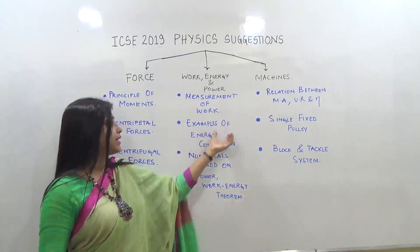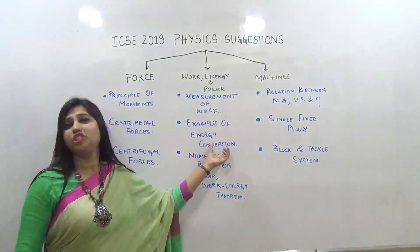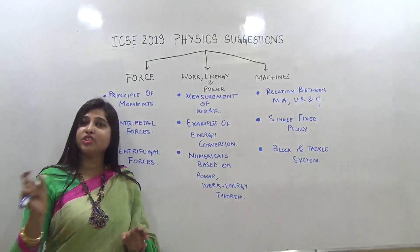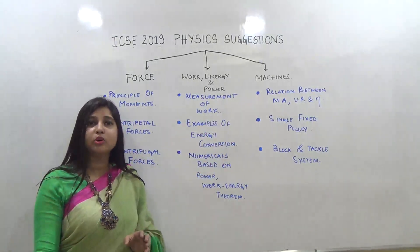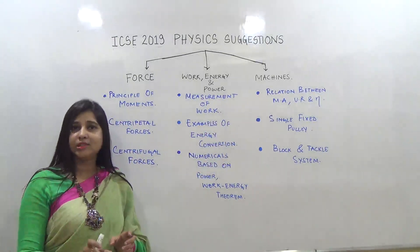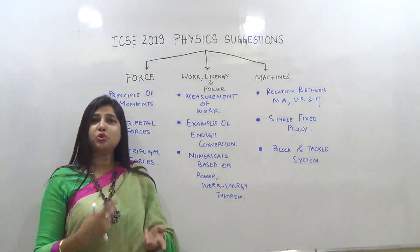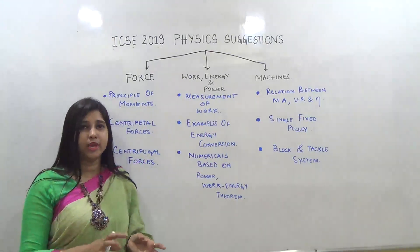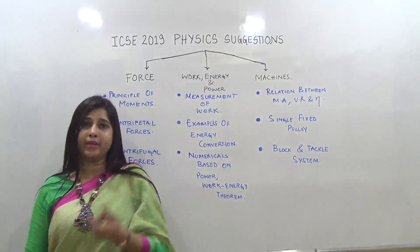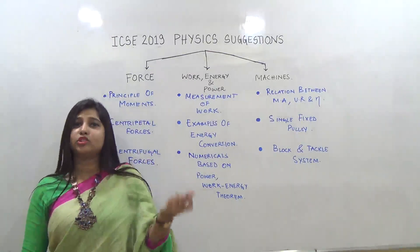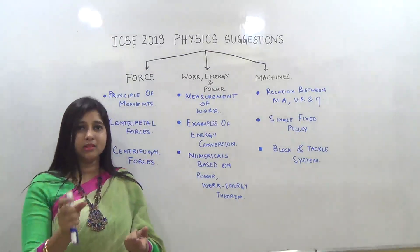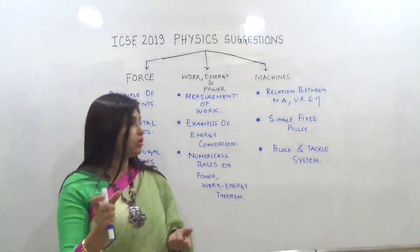Our next topic is examples of energy conversion. There are multiple examples in your book — please go through them, as this is very important this year. Maybe two or three questions can come from there. For example, burning of a candle, photosynthesis — you need to know the energy conversions taking place in each.